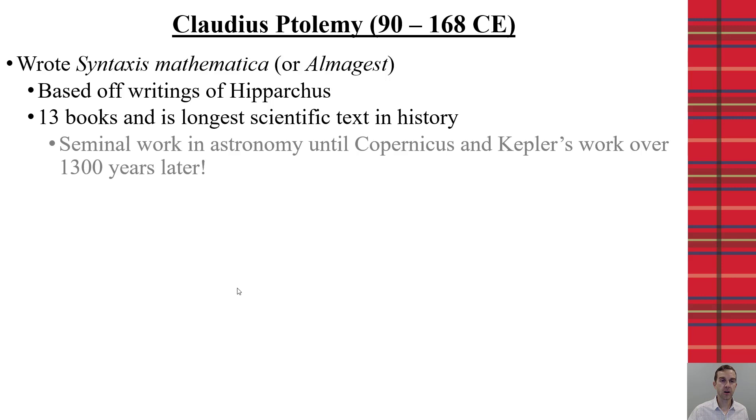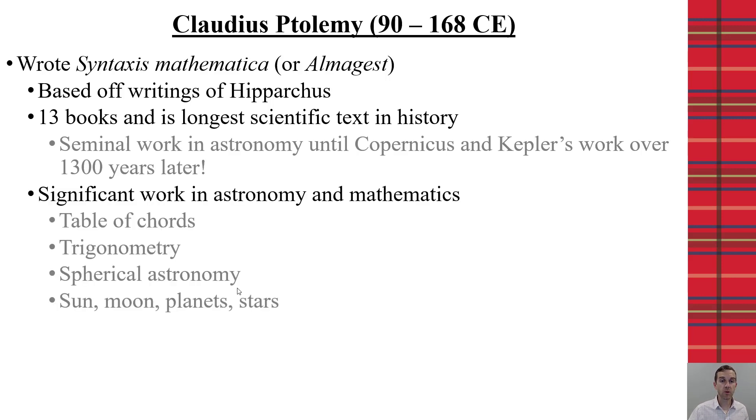So, it was a very, very strong piece of work that was used for over 1,000 years. Within this work of 13 books, we see both astronomy, mathematics, trigonometry. The table, of course, was used to help with the astronomy. And then we have spherical astronomy.